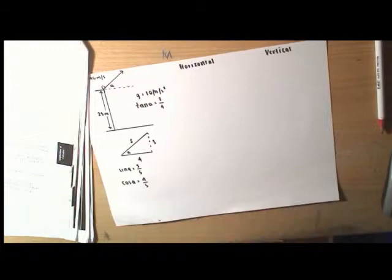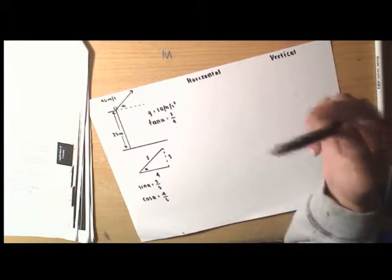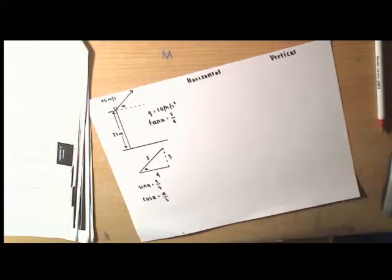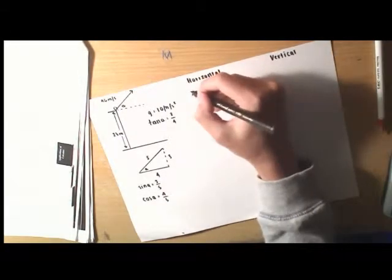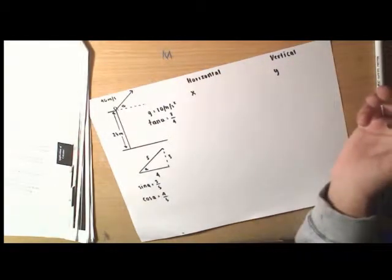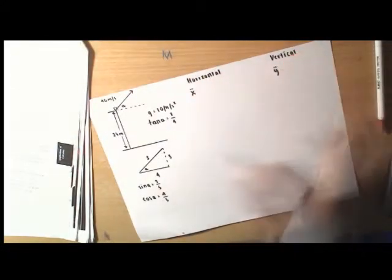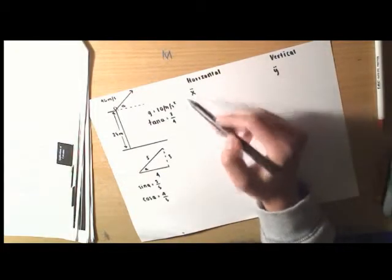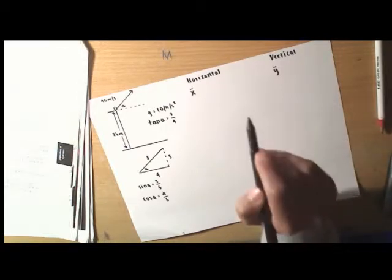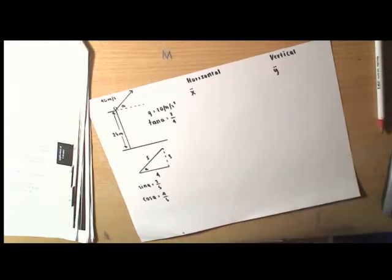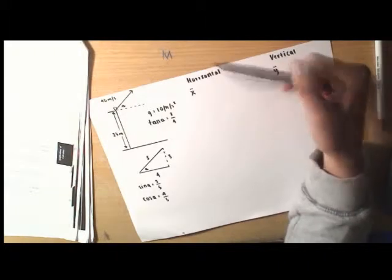For my notations, I'll be using x and y for horizontal and vertical respectively, and I'll be using dot notation. x double-dot means acceleration, x with one dot means velocity, and no dot means displacement. When you integrate acceleration you get velocity, and when you integrate velocity you get displacement.